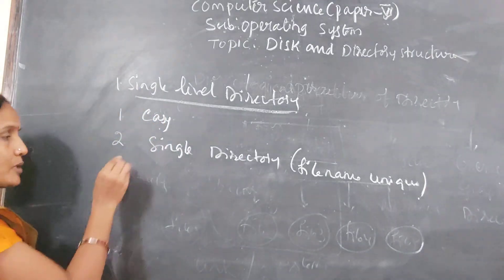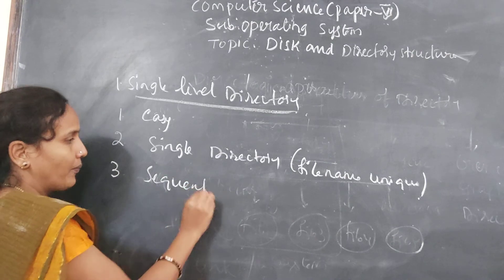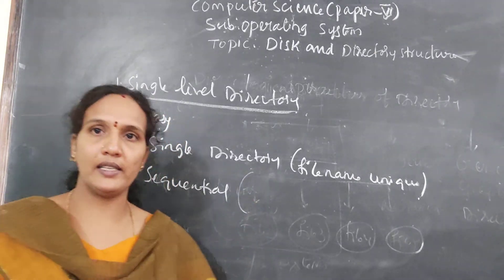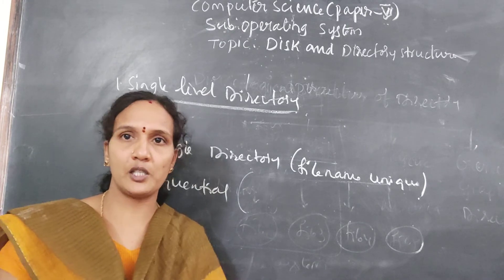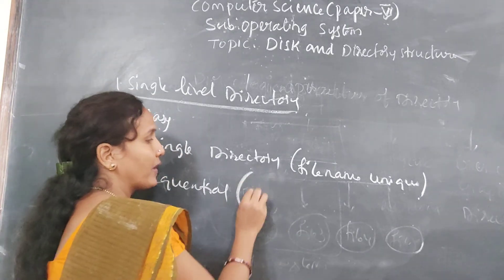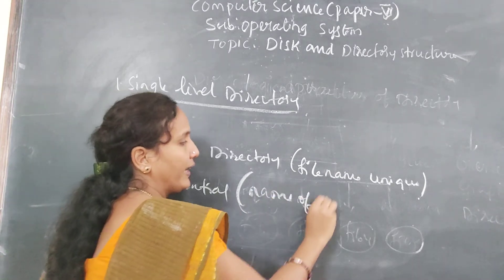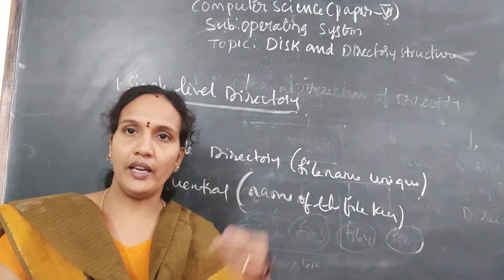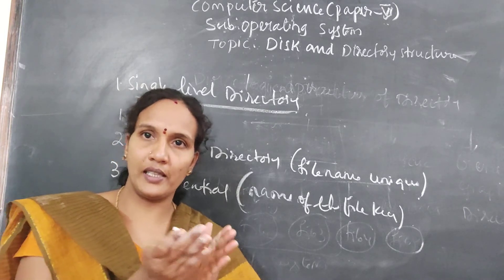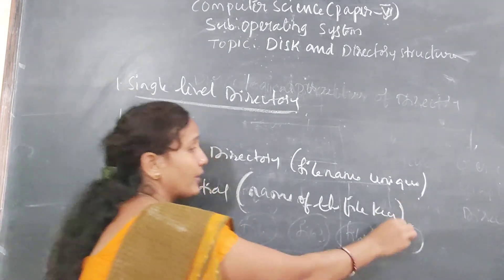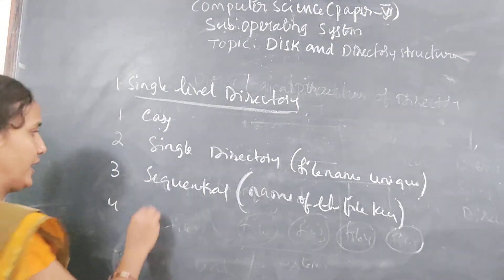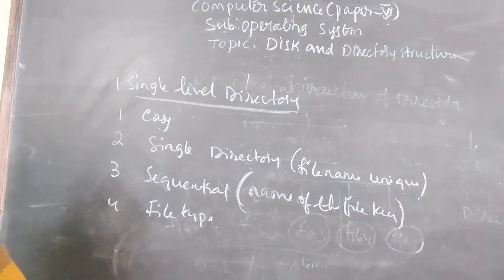When displaying files, it uses a sequential method — it lists all files sequentially. On what basis does it display files? It uses the name of the file as a key, displaying files in ascending order, A to Z. It is not possible to display files using a file type in a single level directory.